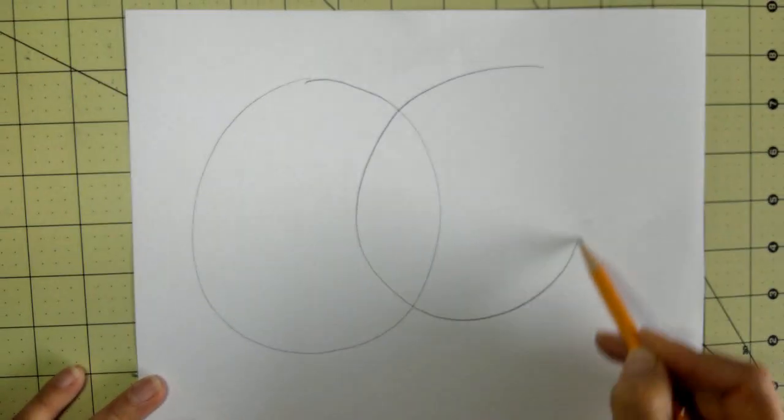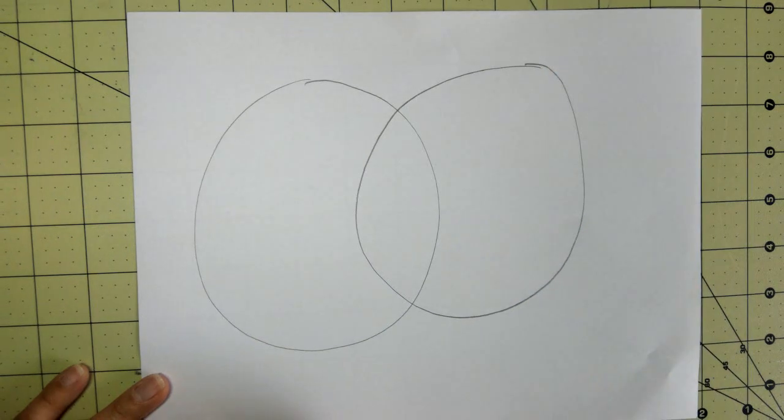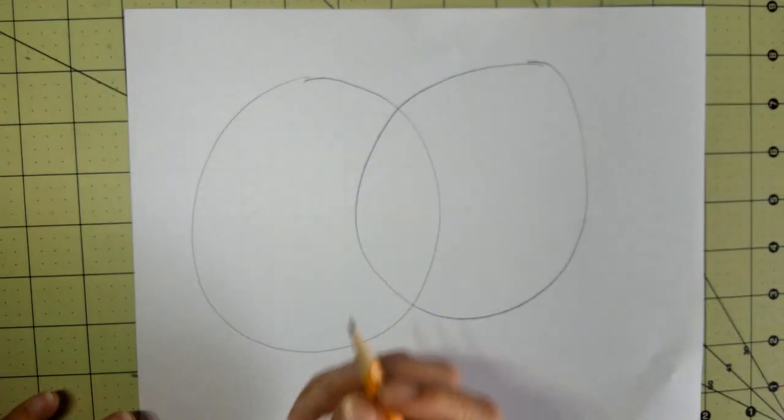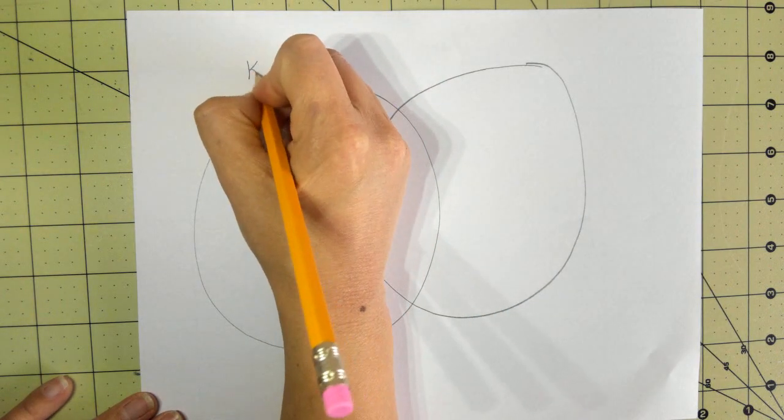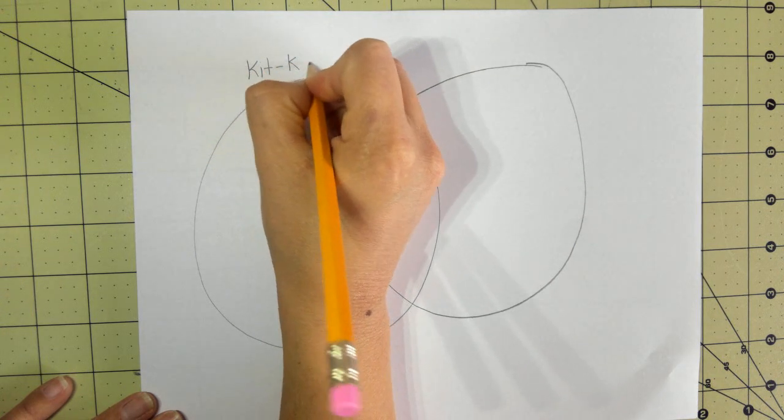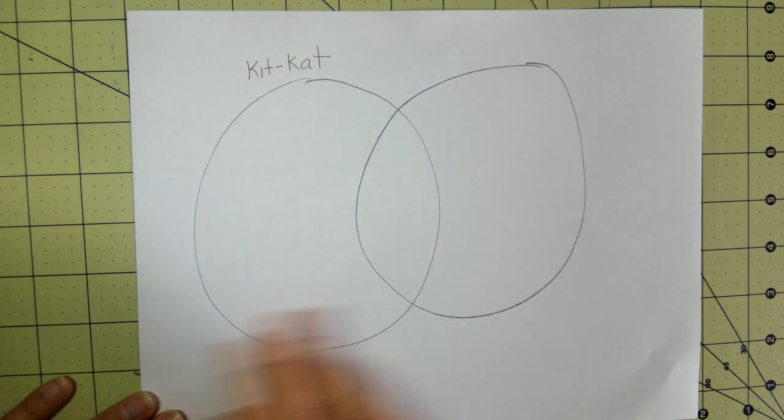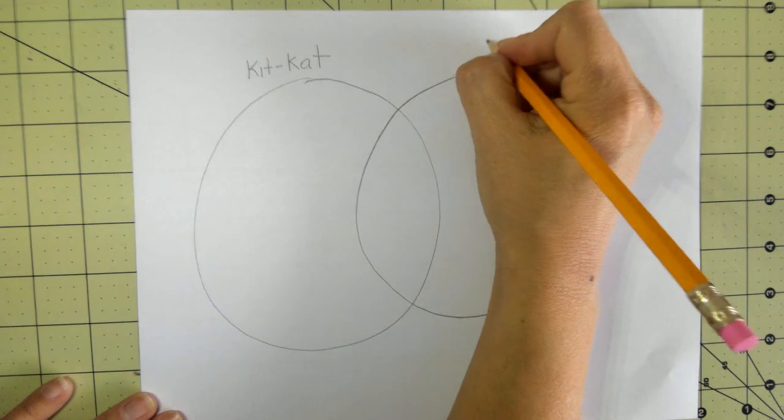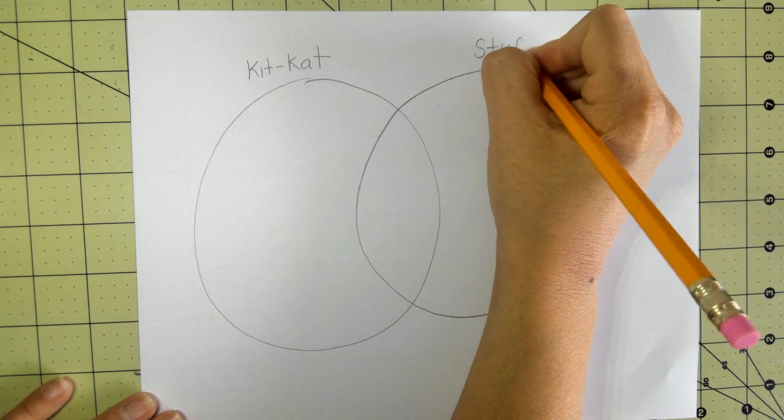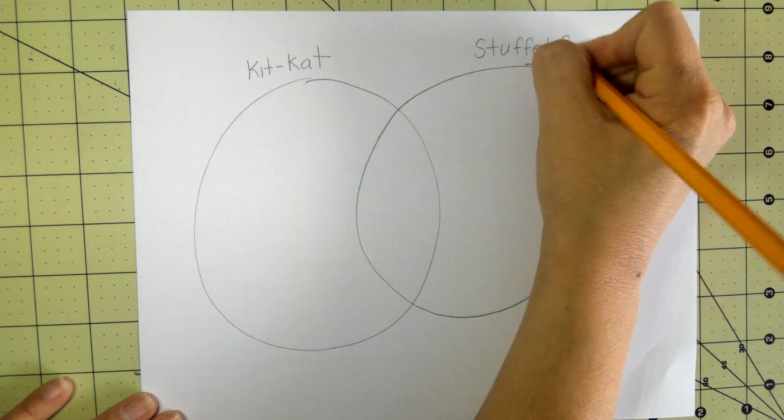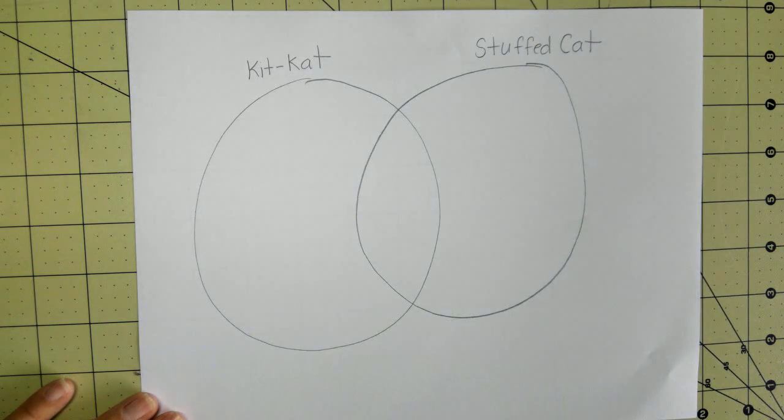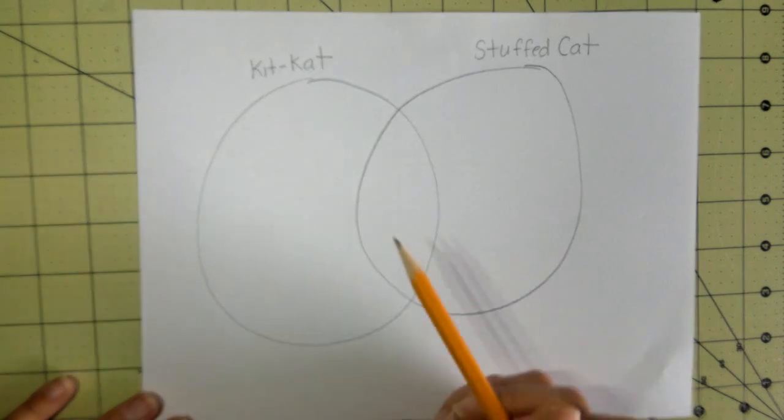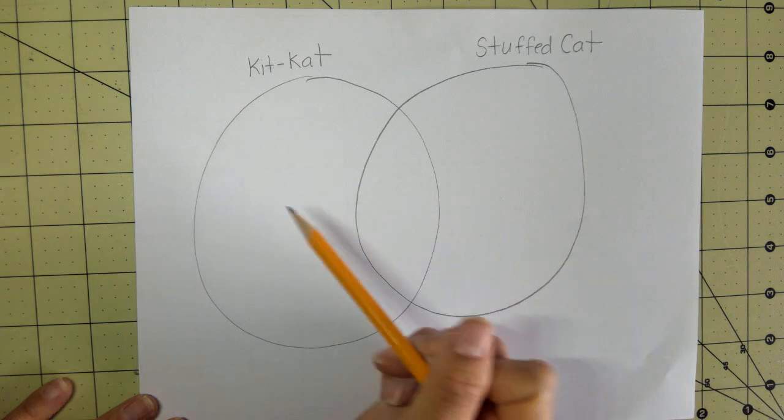One side we're going to label Kit Kat because that's my cat's name, like the candy. On the other side we're going to label it stuffed cat because it was a pretend cat. The ways that they were the same we're going to put in the middle, and the ways that they were different we're going to put on the sides.